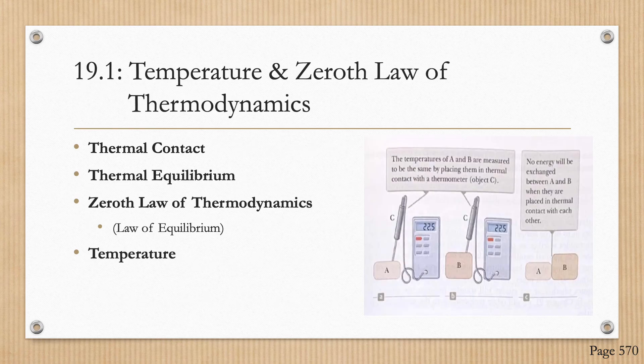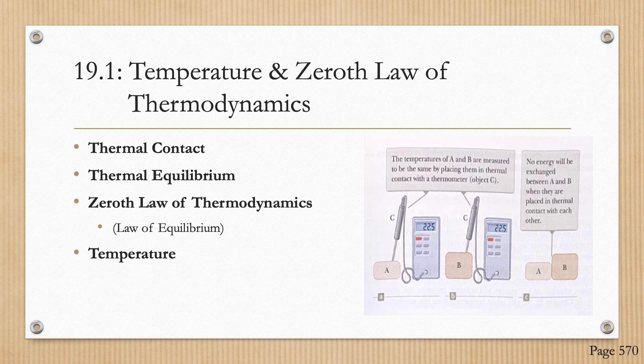In the first section we are discussing temperature and the zeroth law of thermodynamics. We will need to consider the energy transfer exchanges from chapter 8, particularly focusing on heat and electromagnetic radiation. Two objects are in thermal contact if energy can be exchanged between them due to a temperature difference. Thermal equilibrium occurs when two objects would not exchange energy by heat or electromagnetic radiation if placed in thermal contact.